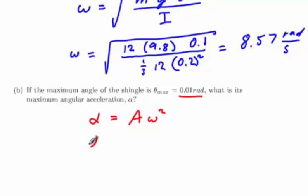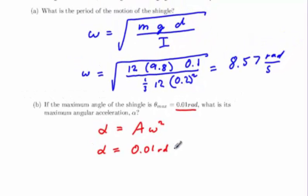Meaning that we can find our angular acceleration in a simple step by placing the 0.01 radians in for the amplitude and multiplying by the ω squared from the previous step. This yields the result 0.735 radians per second squared.